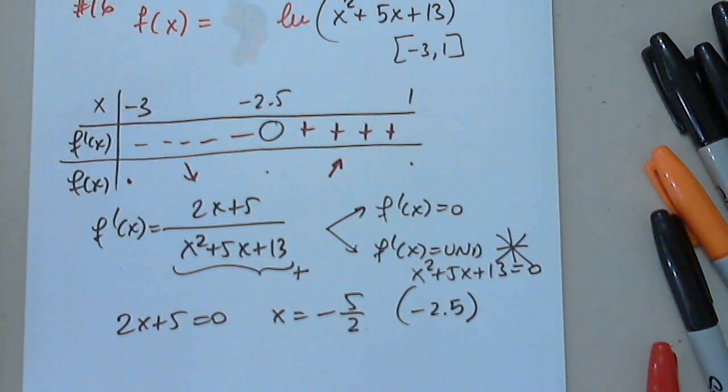So this time I will put this function in. I don't really need any of these. So the function was natural log. And in parentheses, x squared plus 5x and plus 13. And all I care about are negative 3, negative 2.5, and 1.